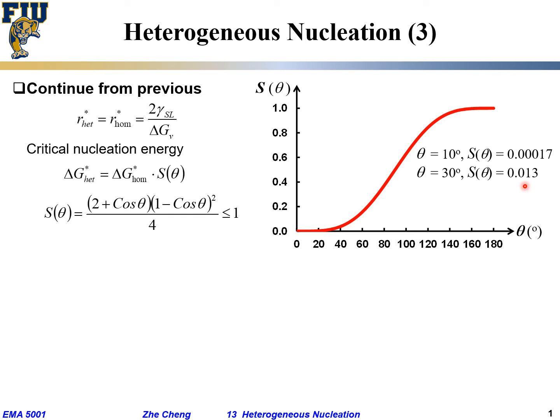Which route would it prefer? Typically the much lower energy barrier. Even at θ = 60°, f(θ) is still only 15 percent. At θ = 90° — the so-called semi-sphere — f(θ) is one half. So you can see how heterogeneous nucleation, depending on the wetting angle θ, can drastically reduce the nucleation barrier and dramatically increase the probability of nucleation.